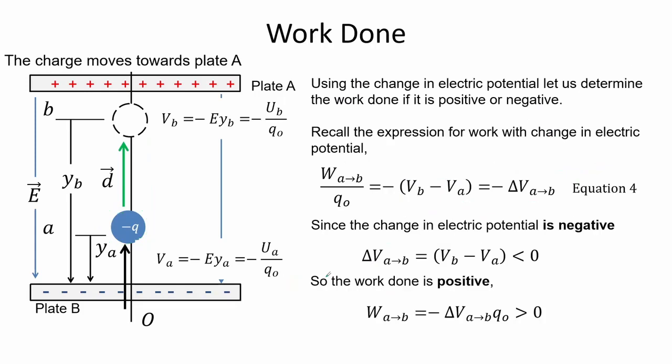Using the change in electric potential, let us determine whether the work done is positive or negative. Recall the expression for work with change in electric potential, equation 4. Since the change in electric potential is negative, the work done is positive.